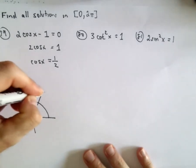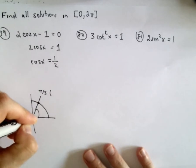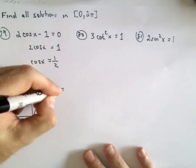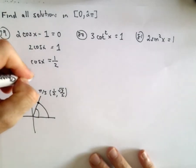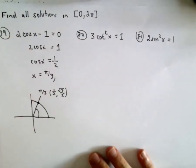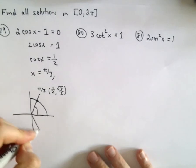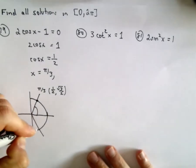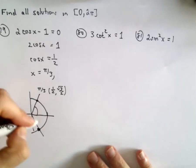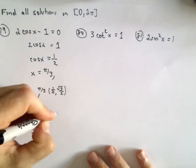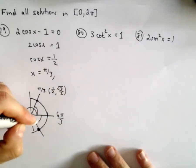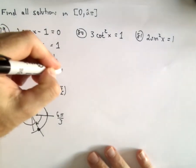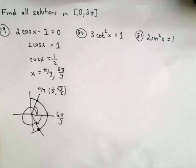At the angle pi over 3, that angle hits the unit circle at the point (1/2, √3/2). Cosine represents the x-coordinate, so one solution will be at pi over 3. There's another solution in the fourth quadrant where the x-coordinate is also positive 1/2. Going all the way around is 2 pi, but backtracking pi over 3 gives us 5 pi over 3. So the two solutions are pi over 3 and 5 pi over 3.